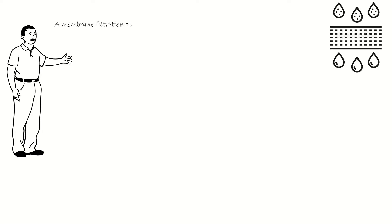A membrane filtration plant flows continuously at 65 liters per second. How many cubic meters of water does the plant produce or provide per year?